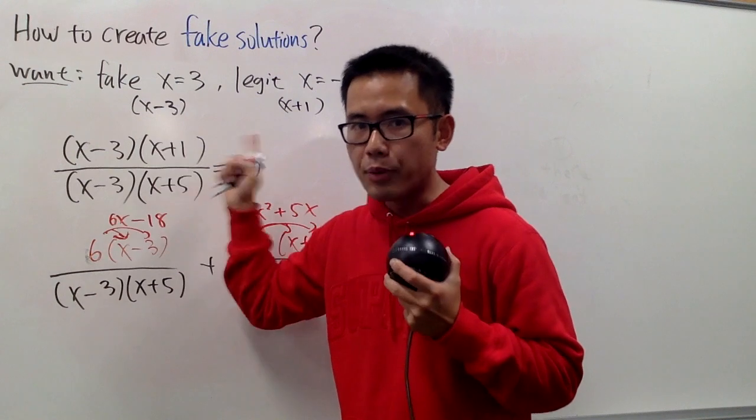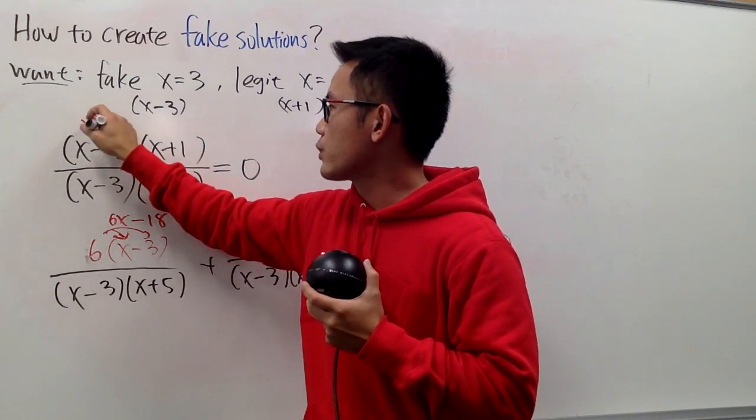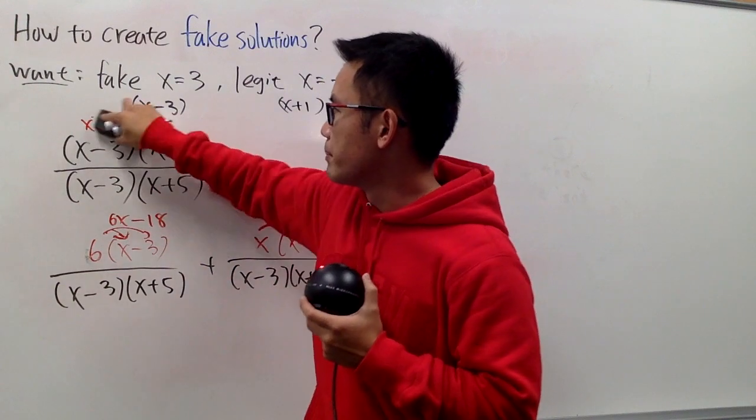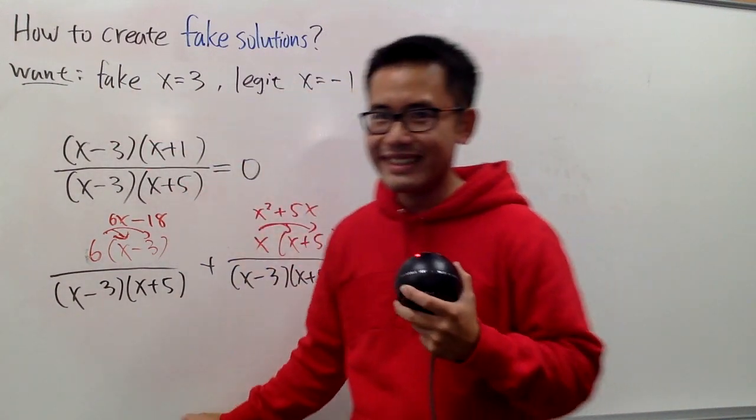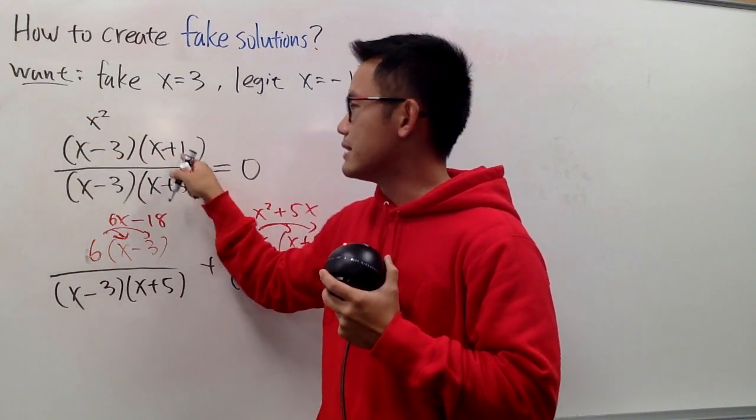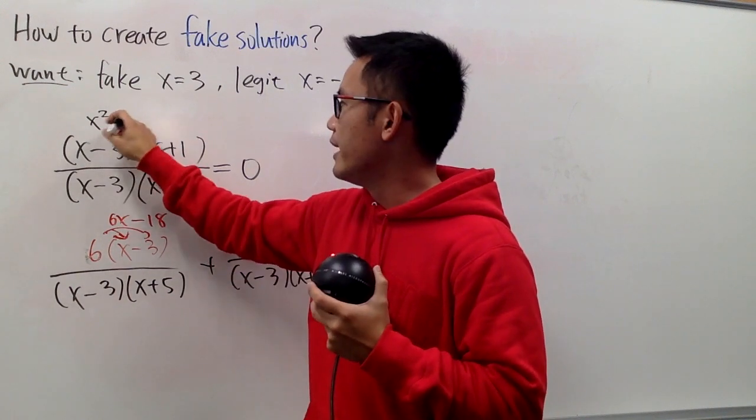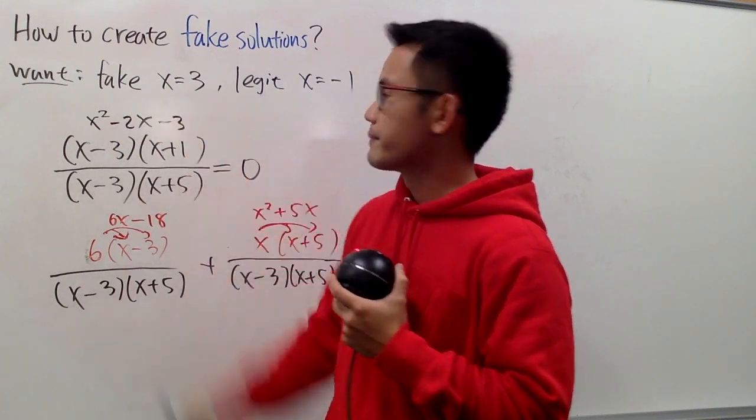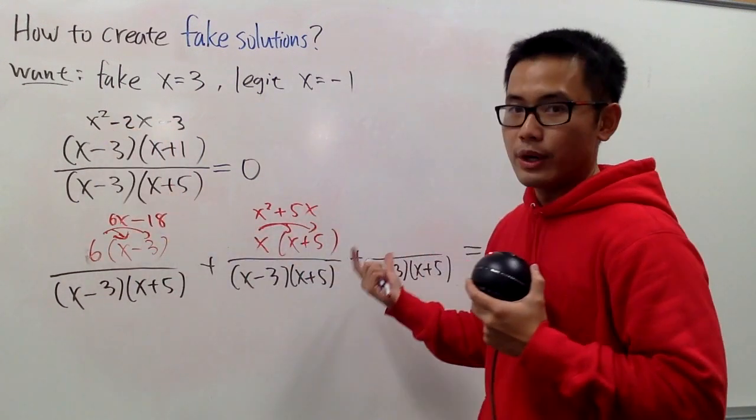Now, compare the top right here. When you multiply this out, x times x is x squared, and this times that is 1x, this times that is negative 3x, so we have negative 2x, and then this times that is negative 3. This is what you want to end up with, and this is what you have already.